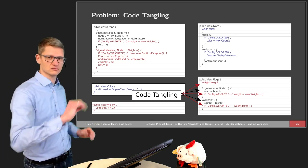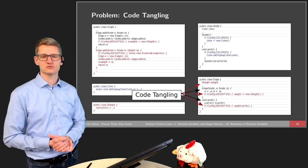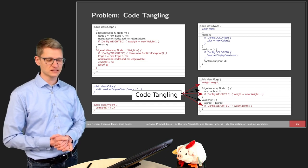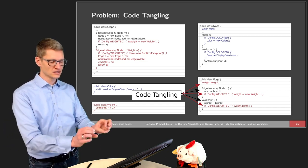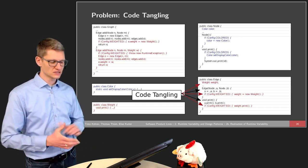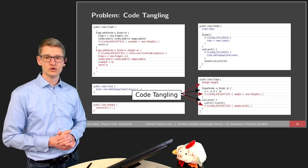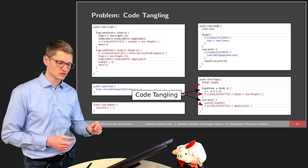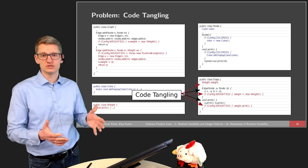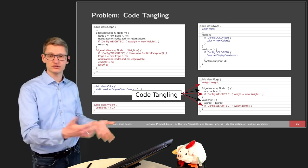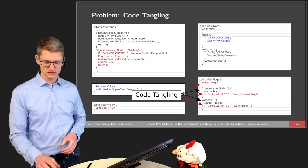Code scattering is also connected to code tangling. The problem with code tangling is that certain feature codes are tangled with each other. In the class Edge, we have two features — the base implementation and the feature 'weighted' — and those are intermixed with each other. In practice, you can have 10 or 20 different features on a single page, making it hard to recognize the scattering and maintain a single constructor that deals with all the features implemented in it.